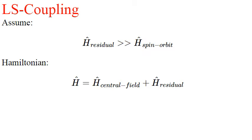The spin-orbit part may be added later as a small perturbation. This Hamiltonian commutes with the orbital and spin angular momentum operators, as well as their z components.